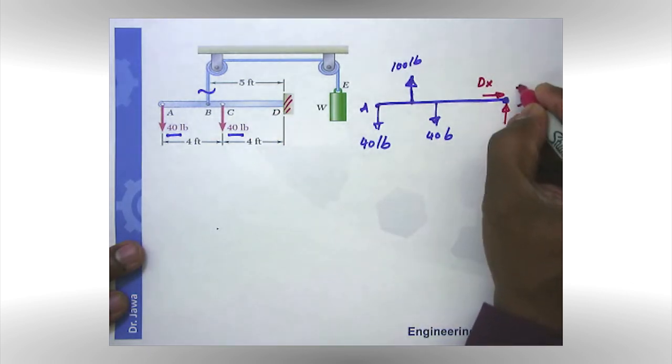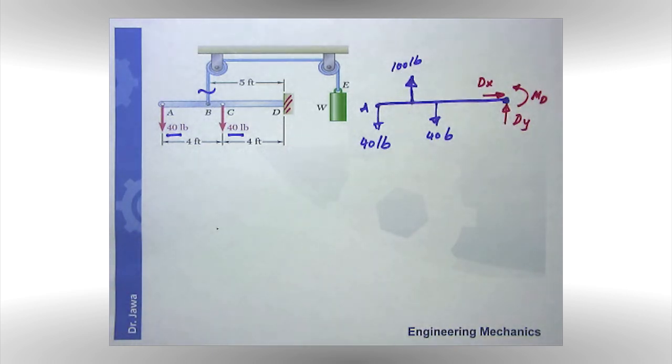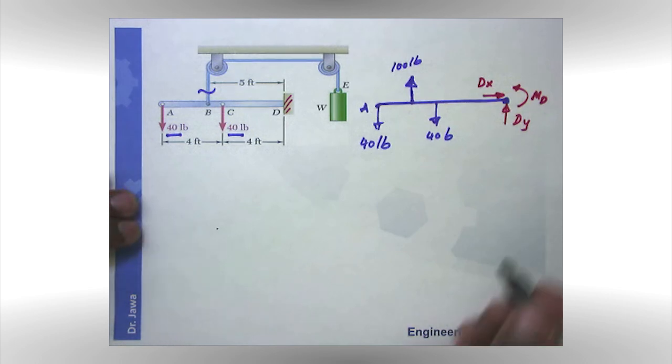So I am going to assume my vertical component of the fixed support is going to be D_y, and my x component is going to be D_x horizontal. And remember, there is a fixed support, so I am going to have a moment about point D. So that's my support reaction. And the free body diagram is almost done, but it is not complete yet.